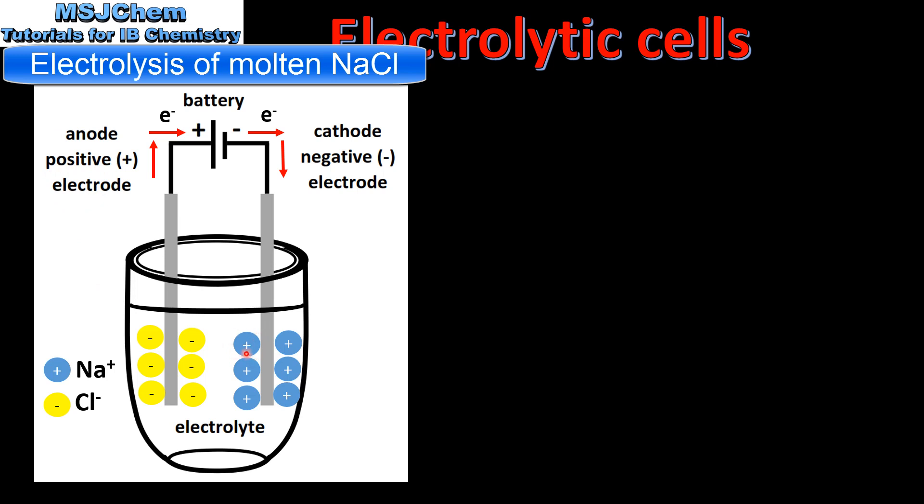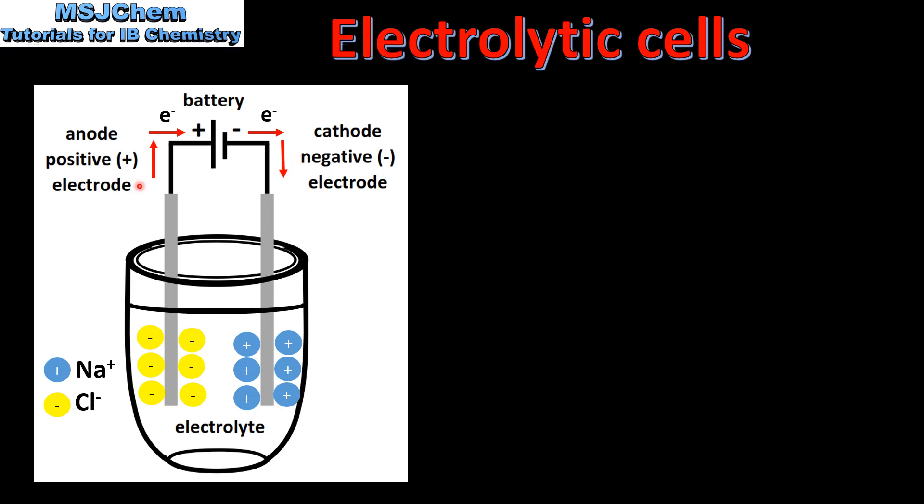The positive sodium ions are attracted to the cathode which is the negative electrode. The electric current is conducted in two ways: by movement of electrons in the wires from the anode to the cathode and by the movement of the ions in the electrolyte.